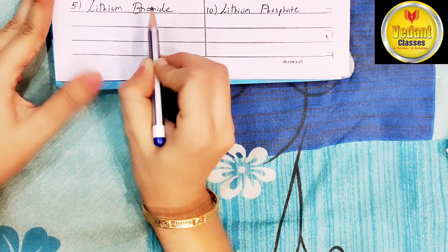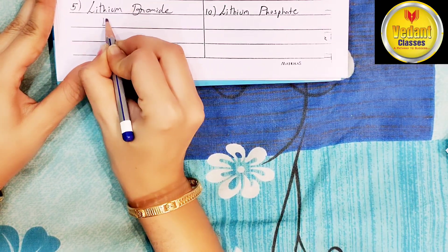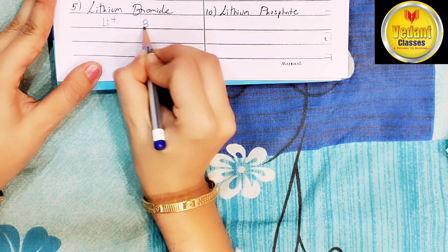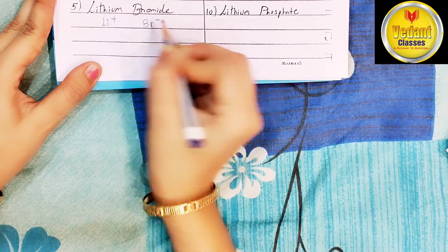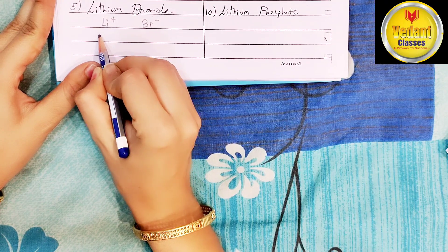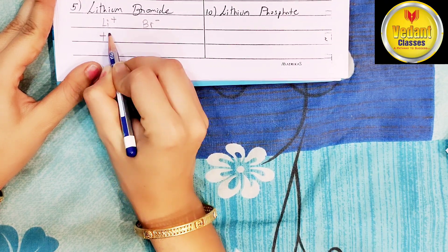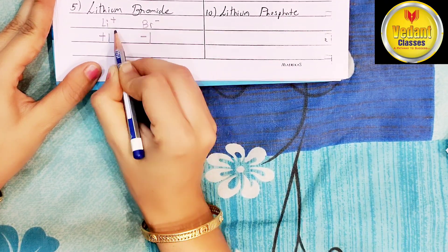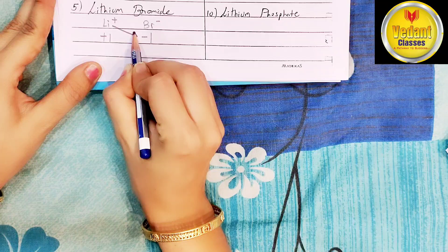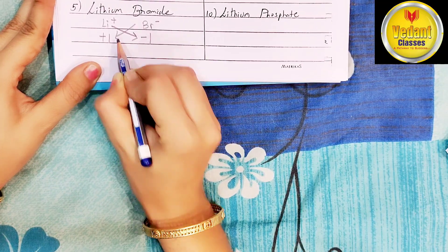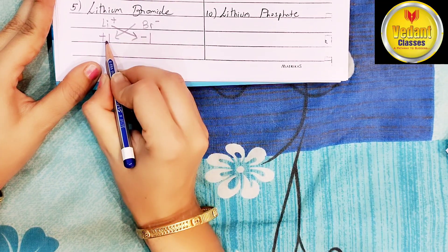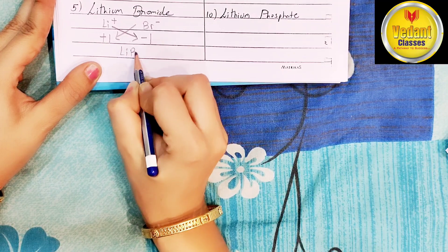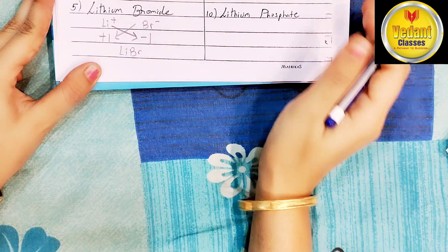Lithium bromide: lithium ion is written as Li+, bromide ion is written as Br-. Valency of lithium ion is plus 1, bromide ion is minus 1. Now cross the valency. Compound will be LiBr — lithium bromide.